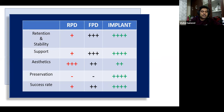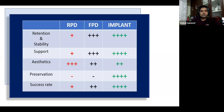Removable partial dentures and tooth-supported fixed partial dentures do not preserve bone or adjacent abutment teeth as well as implants. So in general, implant treatment is the best modality for prosthetically rehabilitating missing teeth.